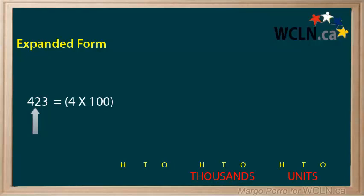The 2 is in the tens place, so we write 2 times or 2 groups of 10. We can add that to our expanded form. The 3 is in the ones place, so we add 3 times 1. This completes the expansion of 423. Times simply means groups of, so this works really well.